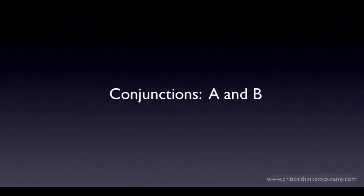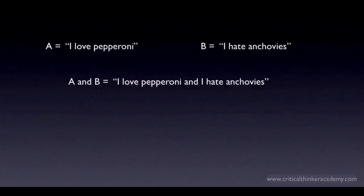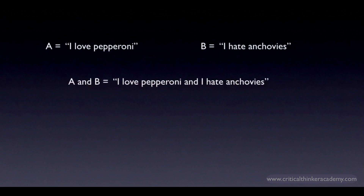A conjunction is a compound claim formed by conjoining two or more component claims. The component claims are called the conjuncts. The logic of conjunctions is pretty straightforward. Here's a simple conjunction pertaining to my preferences for pizza toppings. Let A stand for the claim that I love pepperoni, and let B stand for the claim that I hate anchovies. Then the conjunction of A and B is the compound claim: I love pepperoni and I hate anchovies.